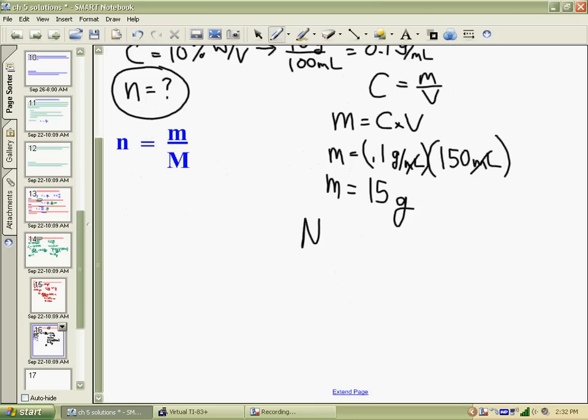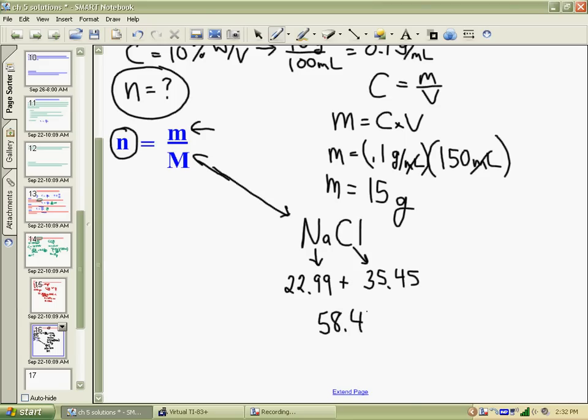So, to get the number of moles, I have my mass of 15 grams. I need the molar mass of sodium chloride. The molar mass of sodium is 22.99. The molar mass of chlorine is 35.45. When we add those together, you get 58.44 grams per mole. That means, if you were to assemble one mole of salt molecules, it would have a mass of 58.44 grams.